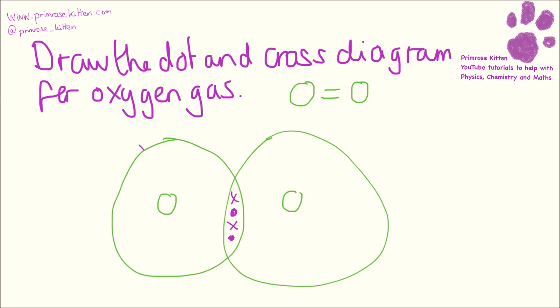Now that's two. We just have to fill the rest up to six. You can see that each oxygen has eight electrons — four in the middle and four of its own.